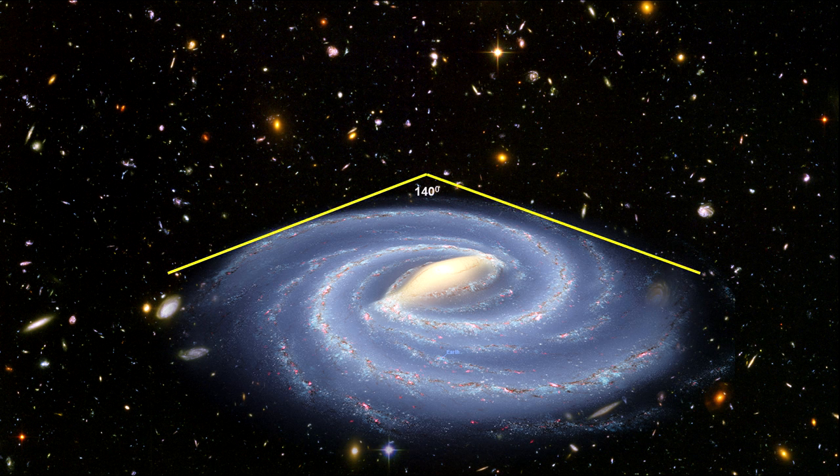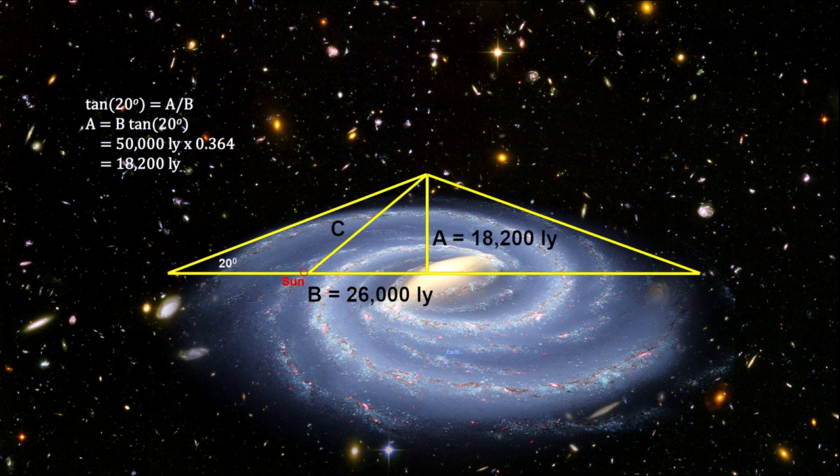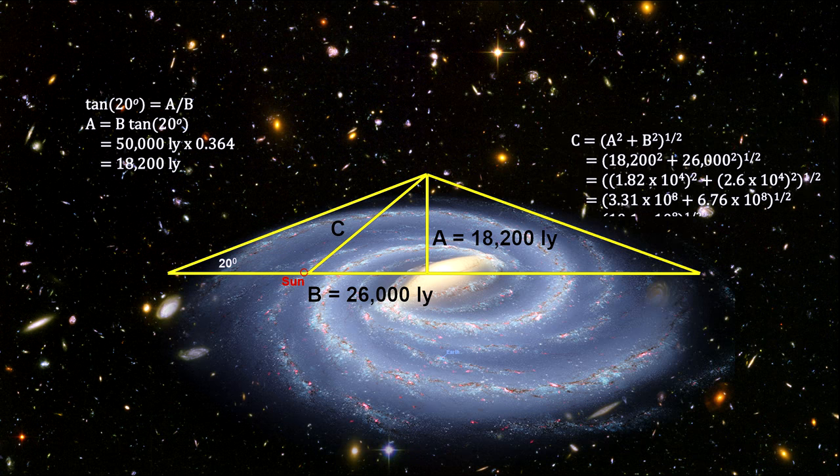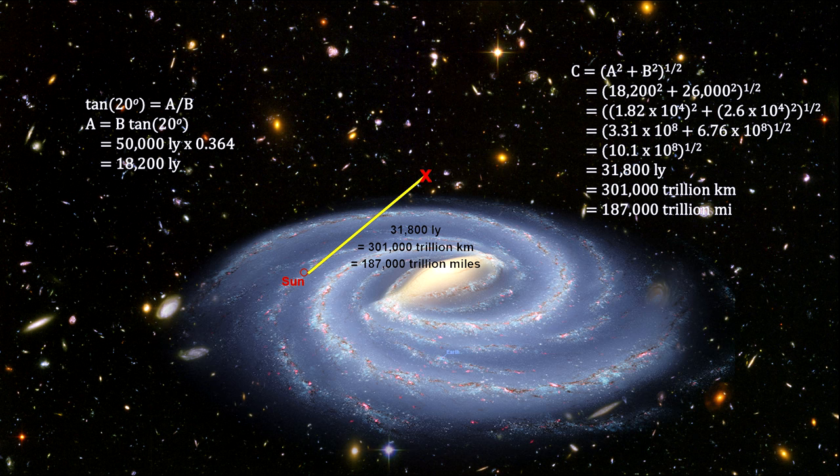If we assume that our field of view is 140 degrees, we can use trigonometry to find the distance to a point where such a picture could be taken. That point is approximately 301 trillion kilometers, or 187 quadrillion miles from the Sun's current location.